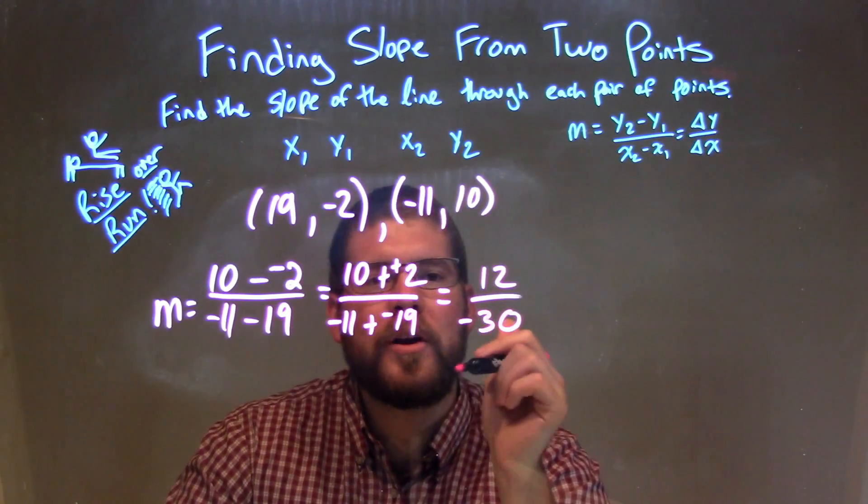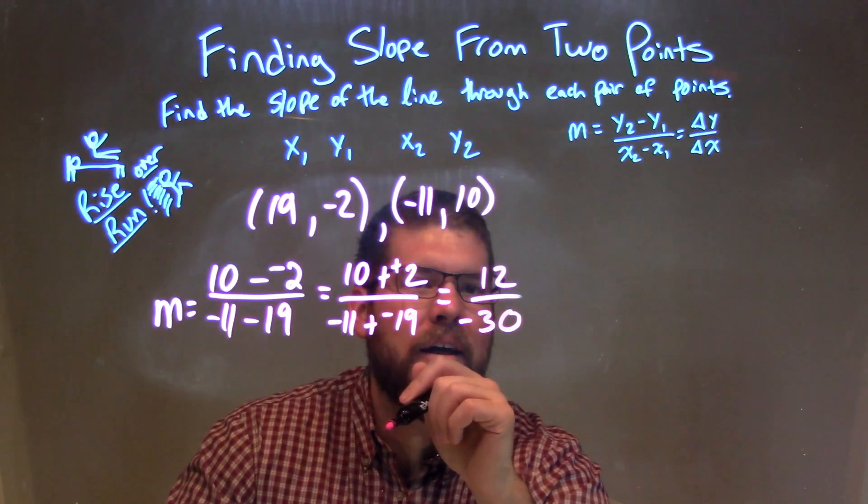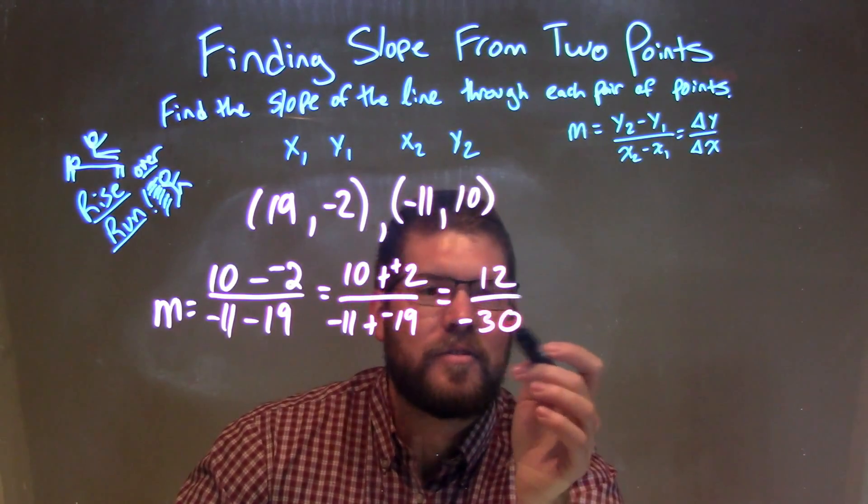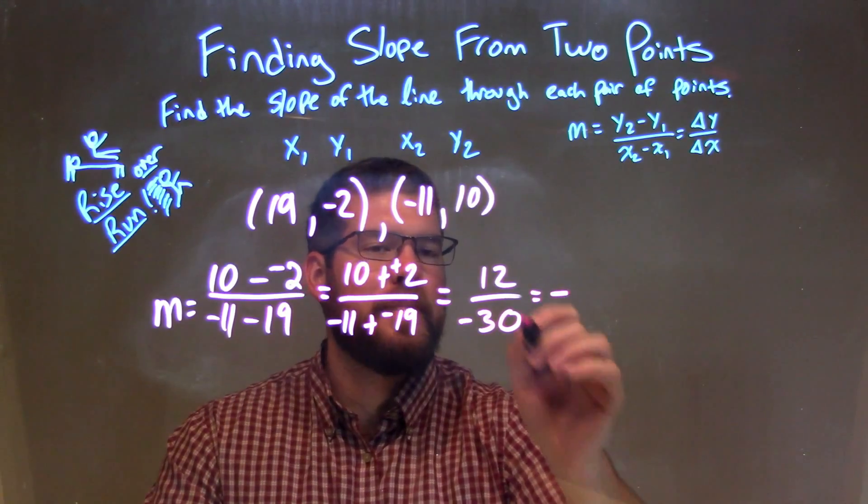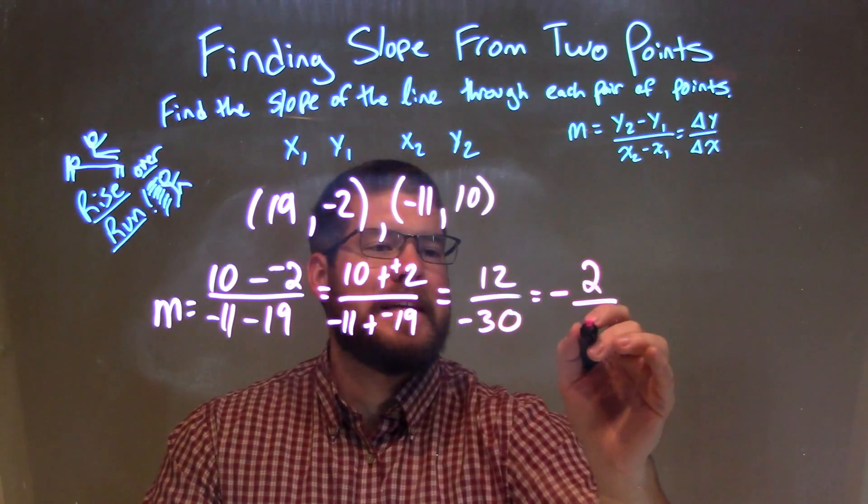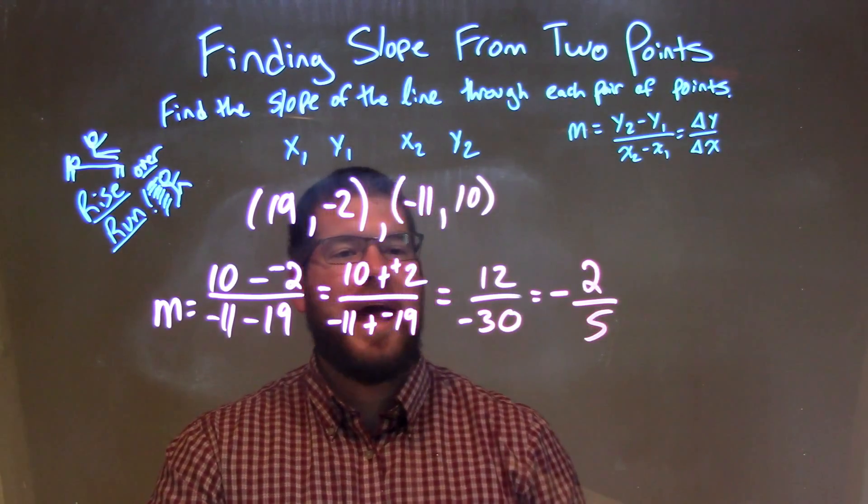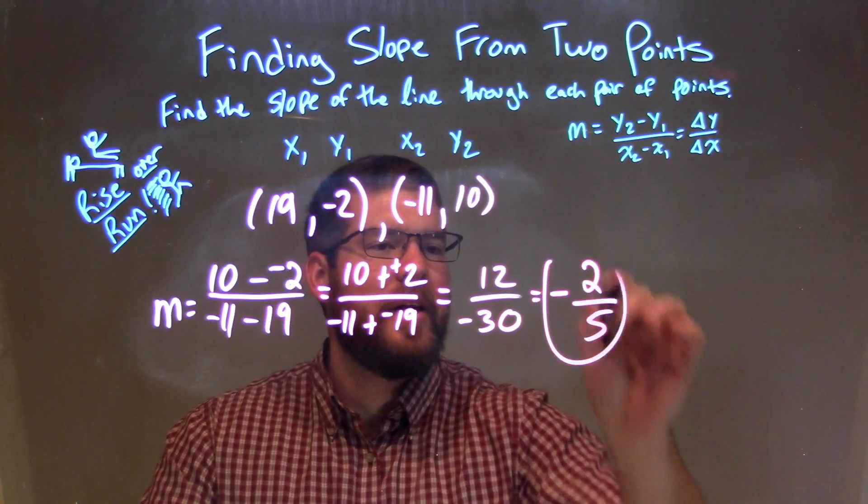Both are divisible by 6. So if we divide both by 6 here, put the negative out front, 12 divided by 6 is a 2, and 30 divided by 6 is a 5. And so we have our final answer, simplified, as negative 2 fifths.